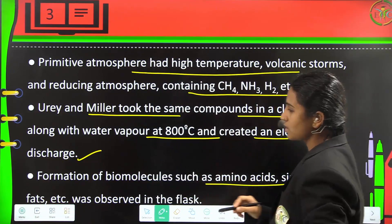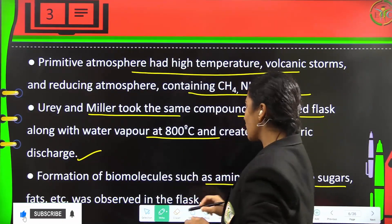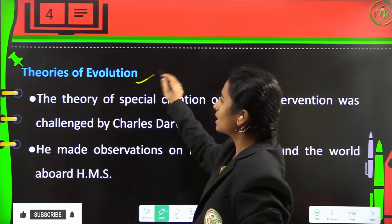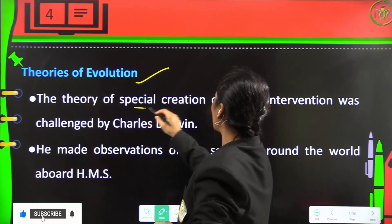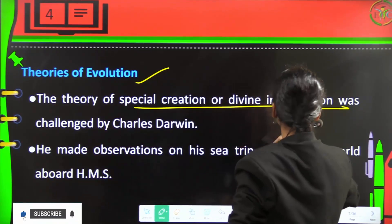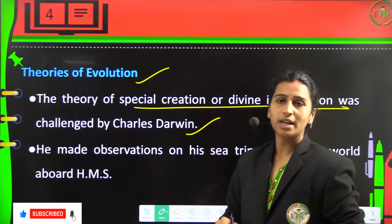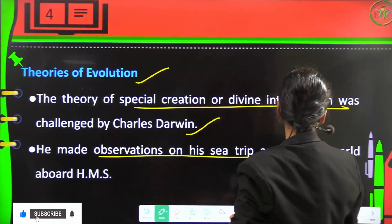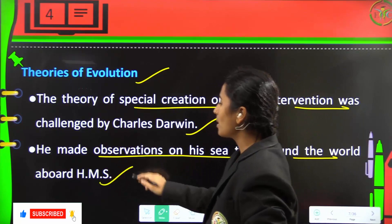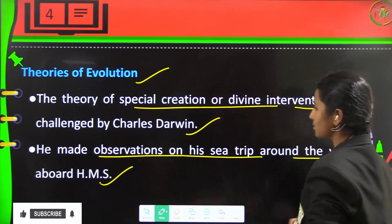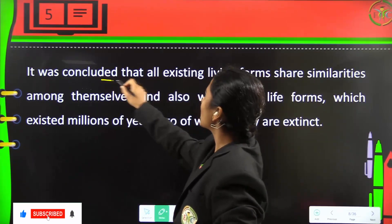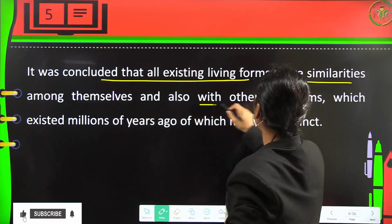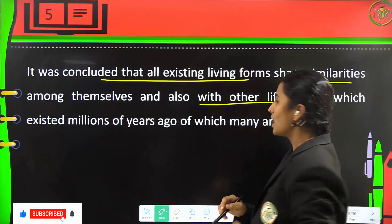Formation of biomolecules like amino acids, simple sugars, and fats was observed in the flask. The theory of special creation or divine intervention was challenged by Charles Darwin, who made observations during his sea trip around the world aboard HMS Beagle.